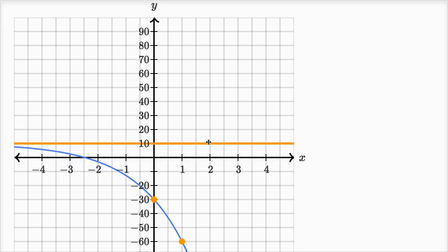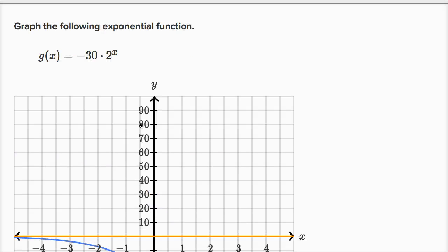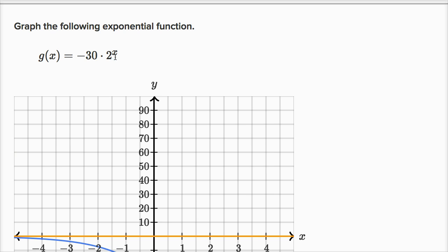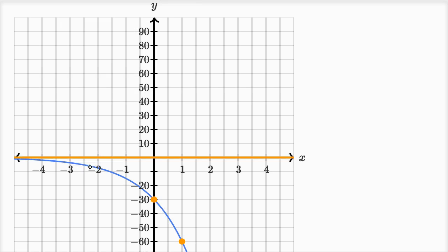Now let's think about the asymptote, where that should sit. What happens when x becomes really negative? Two to the negative one power is one half, two to the negative two is one fourth, two to the negative three is one eighth. As you get larger negative values, or higher magnitude negative values, as x becomes more and more negative, two to that power is going to approach zero. Negative 30 times something approaching zero is going to approach zero, so this asymptote's in the right place.